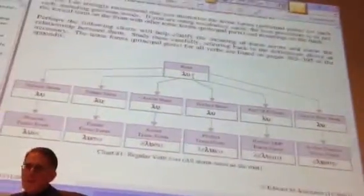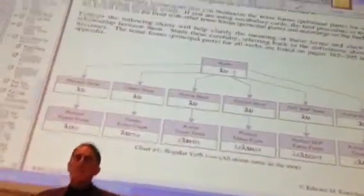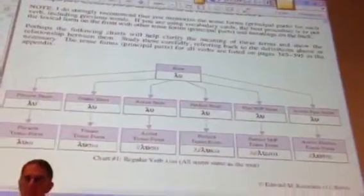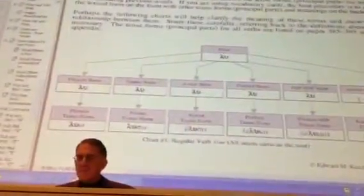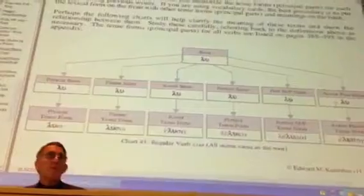Now you'll notice here that for the verb luo, lu is the root. And then every one of the tenses, the stem and the tense, is lu. And you say, but they're all the same as the root. They're not different from the root. Exactly right.